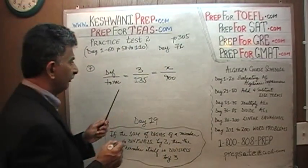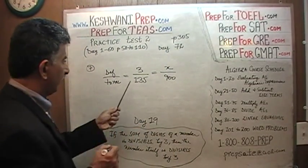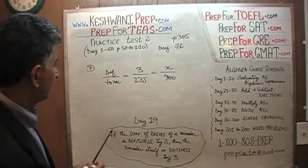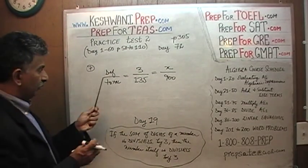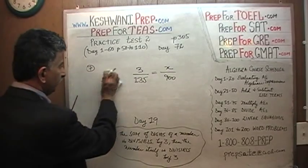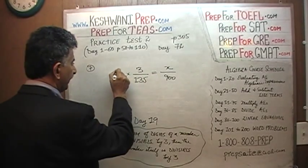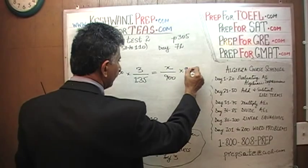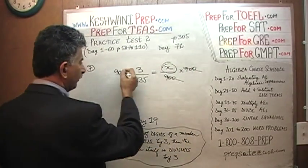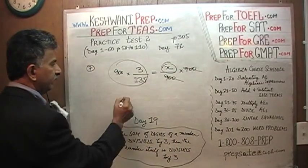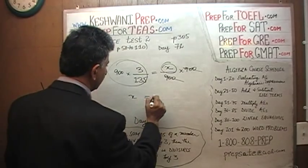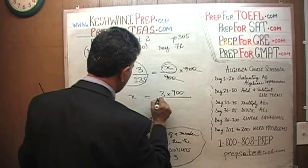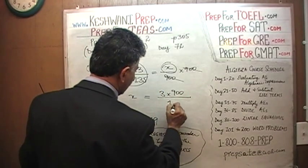So x is simply going to be: if we multiply both sides by 900, this 900 drops out and x equals 3 times 900 over 135.